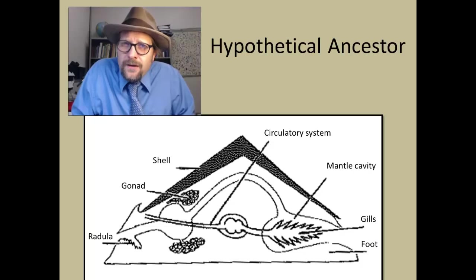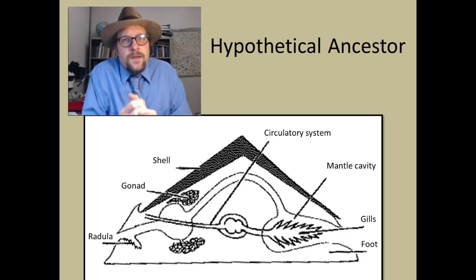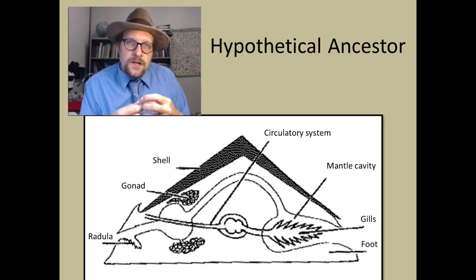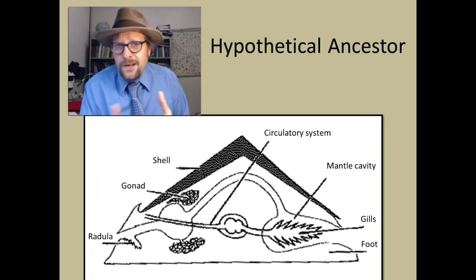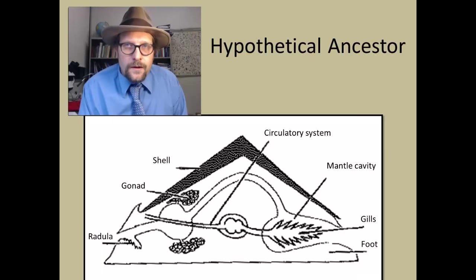Brachiopods don't have gill structures, because they have a lophophore, in which in addition to gathering food particles, can also gather oxygen from the water. Molluscs don't have a lophophore.